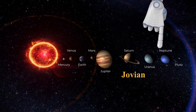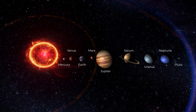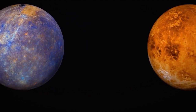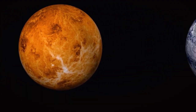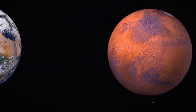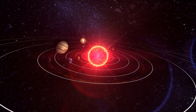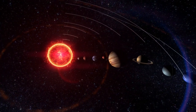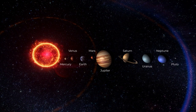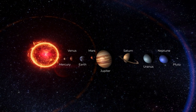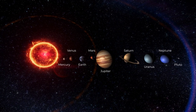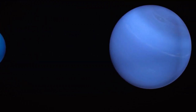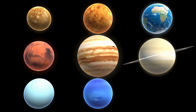The eight planets in their order of distance from the Sun are: Mercury, Venus, Earth, and Mars as the inner planets, and the outer planets Jupiter, Saturn, Uranus, and Neptune.